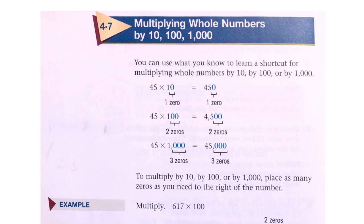Basic Math, Chapter 4, Section 7: Multiplying Whole Numbers by 10, 100, 1000.